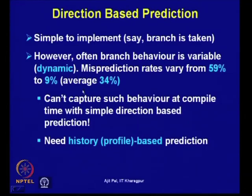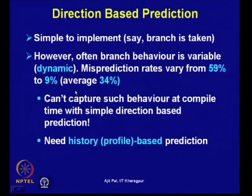The direction-based approach is very simple to implement — it says a branch is taken or not taken. However, branch behavior is often variable. Misprediction rates can vary from 59 percent to 9 percent, and on average it is 34 percent. A static compiler-based approach cannot capture such behavior at compile time with simple direction-based prediction. So it is necessary to have a history-based approach.